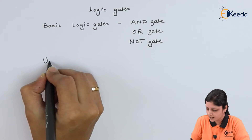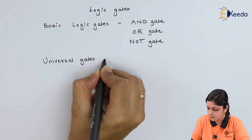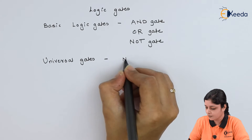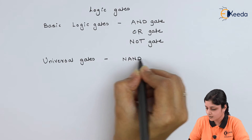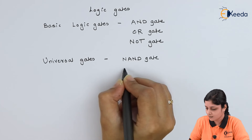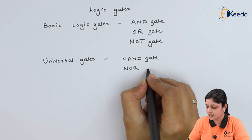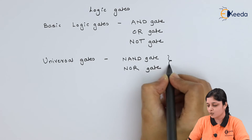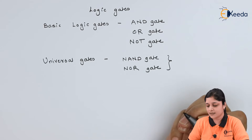Next are universal gates. In the universal gates category, we have the NAND gate and the NOR gate. These two types are called the basic universal gates.